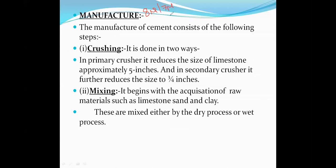Portland cement can be manufactured using two methods: the first is the wet method and the second is the dry method. The first step involved in both is crushing. Initially, limestone is collected from limestone mines, approximately five inches in size, and crushed using a ball milling process to reduce the size.